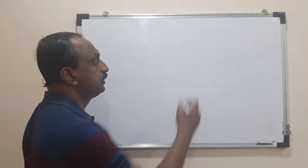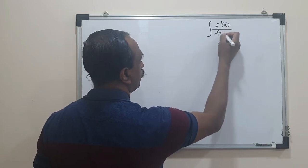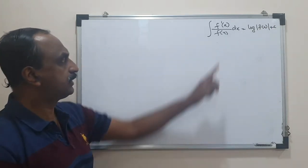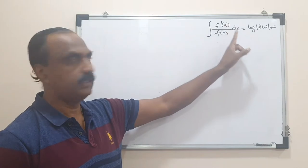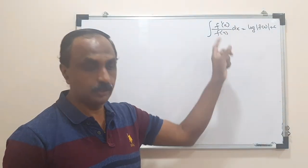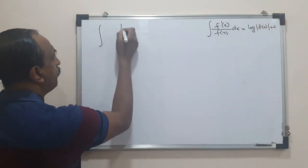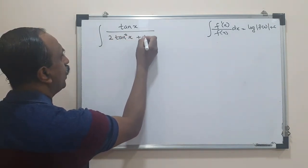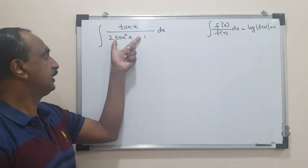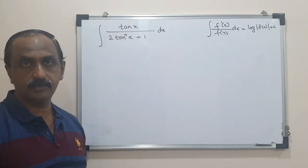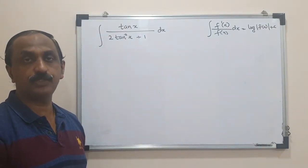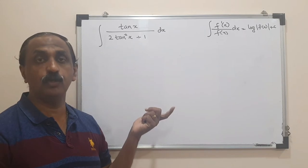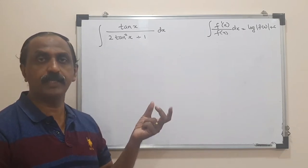Now I will add some more problems of the kind where f'(x)/f(x) dx equals log|f(x)|. Whenever the denominator's derivative is the numerator, the integral answer is log of the denominator. We shall use this for a few questions where manipulation is required. For example: integral of tan x over (2tan²x + 1) dx. If you look at this, the derivative of tan²x is not tan x, so we need to manipulate the function.